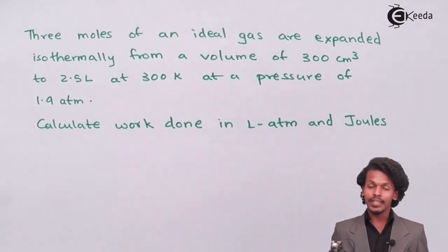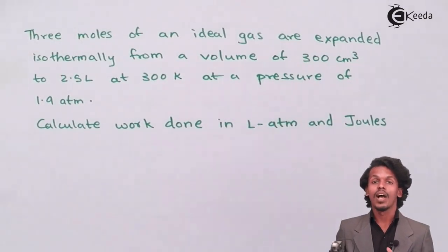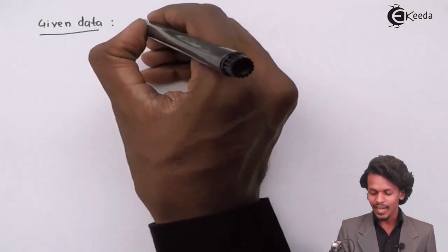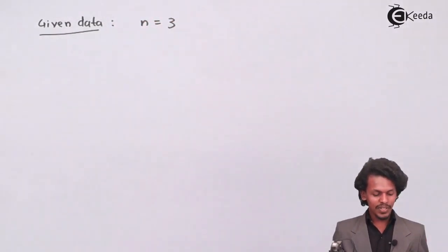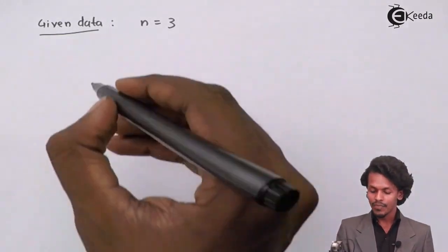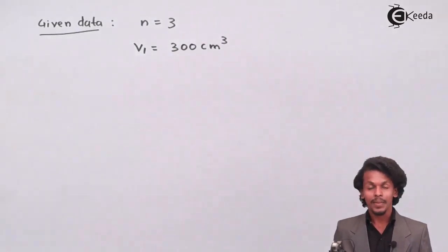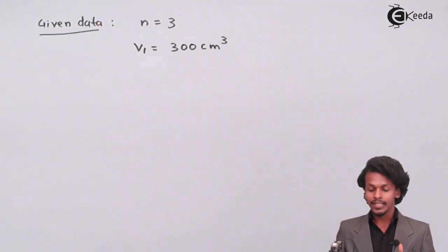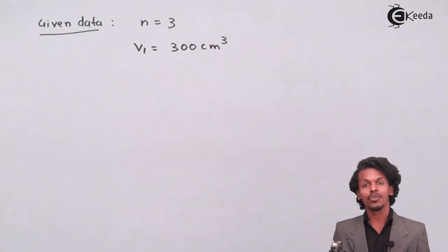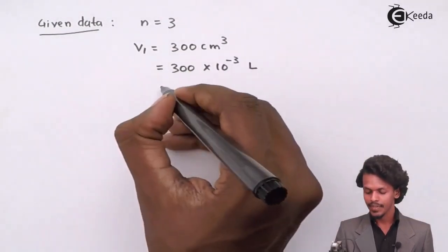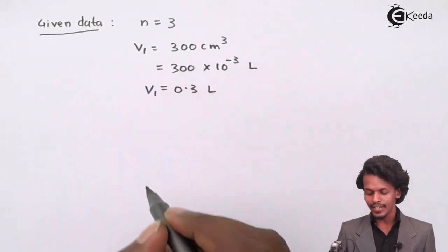Let us extract the data. n = 3 moles. The volume changes from 300 cm³ to 2.5 liters. V1 = 300 cm³, which we convert to liters: 300 × 10⁻³ dm³ = 0.3 liter. We convert to liters because we need to calculate work in liter-atmosphere.